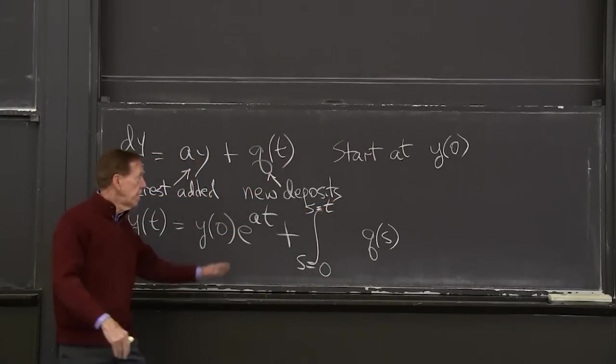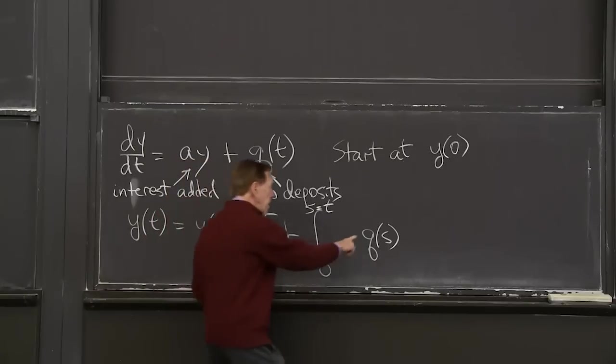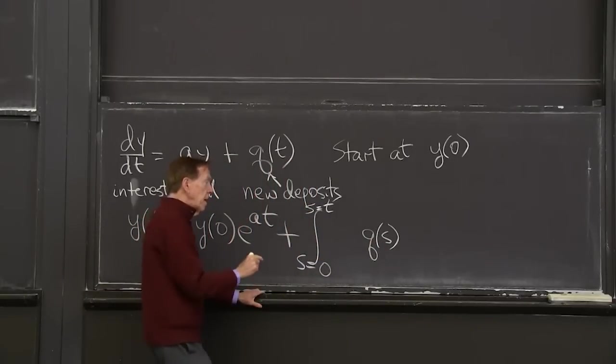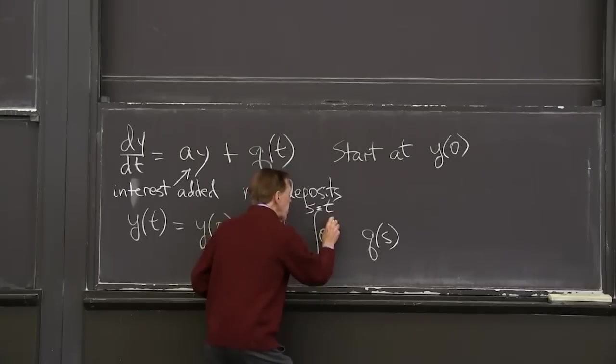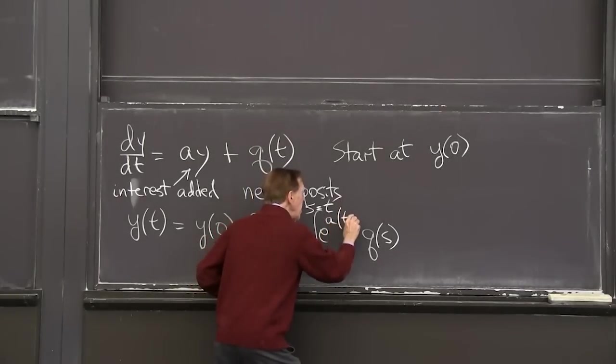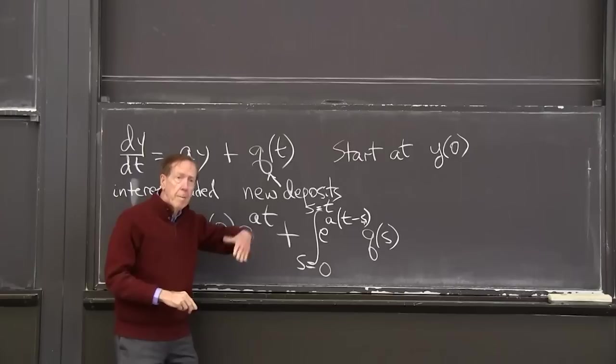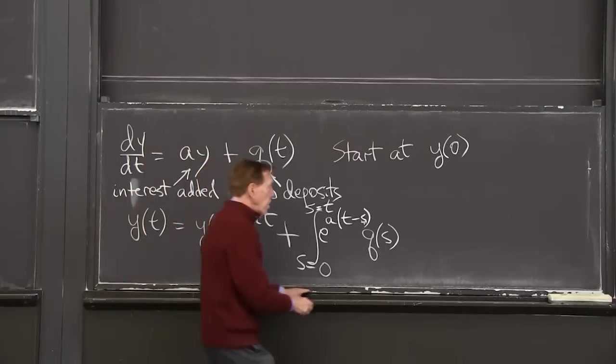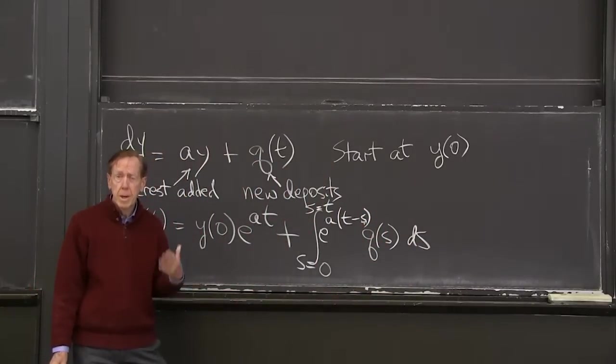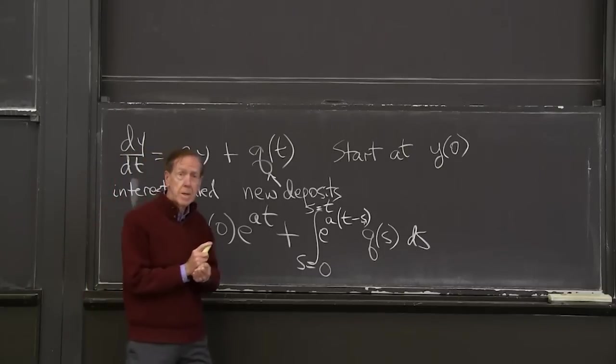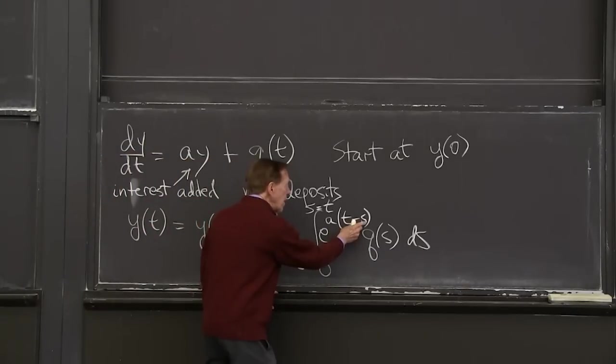You make deposits at any time s between s equals 0 and s equal t. So s is the running clock. t is the, we look at our account and see what's in it. And this deposit is made at time s. And then it grows over the remaining time from s to t. So it grows by a factor e to the a t minus s. That's the key. And now we add up all those deposits with their growth. So that addition for continuous time, addition is integration. That's the whole idea of the integral, is add up continuously. So there is my formula that I'm hoping you will admire.